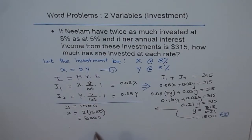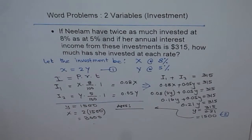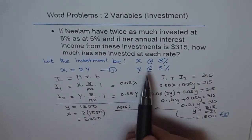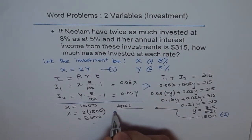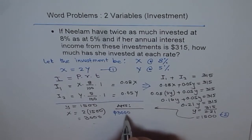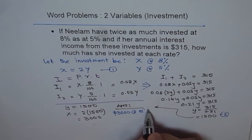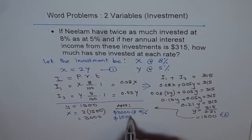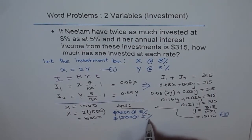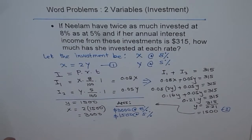That is the answer. So now we can write down our answer. Answer is that the investment at 8% is X. X is 3000. So we say $3000 is invested at 8% and $1500 is invested at 5%. Then you get a total return of 315.